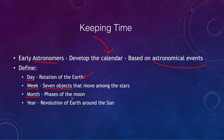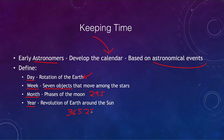Our month is based on the phases of the moon. The phases of the moon go through a 29.5-day cycle, which is very close to a typical month. A year is based on the revolution of the earth around the sun — how long it takes the earth to move around the sun — which is 365 and a quarter days.